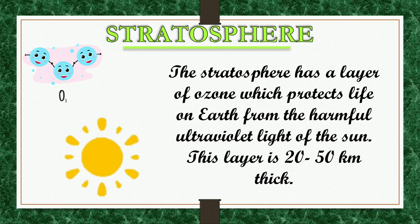Stratosphere: The stratosphere has a layer of ozone which protects life on the Earth from harmful ultraviolet light of the Sun. This layer is 20 to 50 kilometers thick.